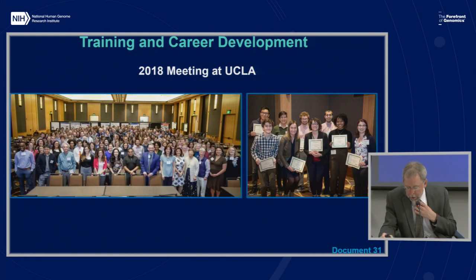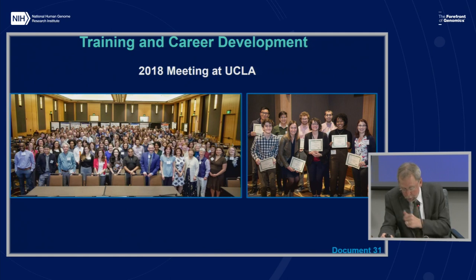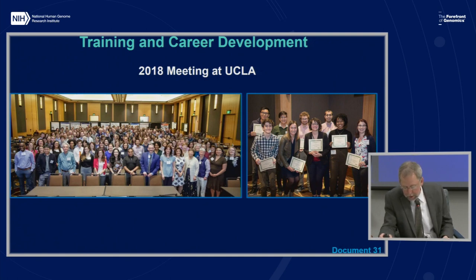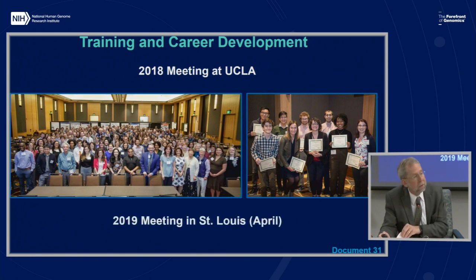The NHGRI Research Training and Career Development program held its third annual meeting at UCLA in March. This annual meeting provides a venue for all NHGRI-supported trainees to come together, present their research, and form collaborations. Of the 274 attendees, 194 trainees presented abstracts as either a poster, a lightning talk, or an oral platform presentation. Trainees came from the Diversity Action Plan programs, T32 training programs, the Centers of Excellence and ELSI Research Program, the NHGRI Intramural Research Program, and individual fellowship and career development award awardees. The next annual training meeting will take place in St. Louis next April.